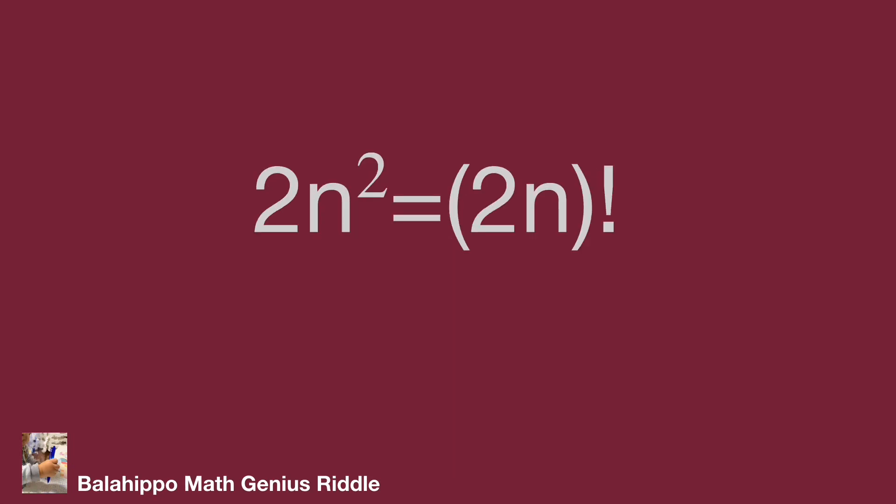Our equation is 2 times n squared equals (2n) factorial. What value of n satisfies this equation? A quick guess: try n equals 1. Then 2 times 1 squared equals 2, and (2 times 1) factorial equals 2 factorial equals 2. So n equals 1 is the answer.